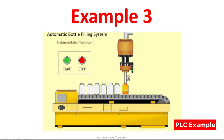Then the valve output will turn on. Once the bottle is getting filled, we turn off this output. After that, the conveyor will again start, and the process will continue. Again the sensor will sense the next bottle, the valve will get open, the bottle will get filled, then it closes, and conveyor goes on again. This will repeat until there is no bottle or until the stop push button is pressed.